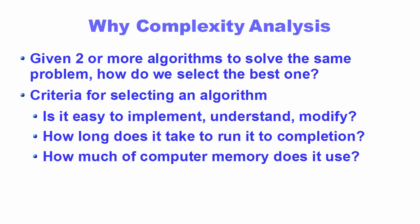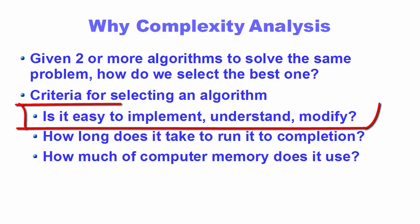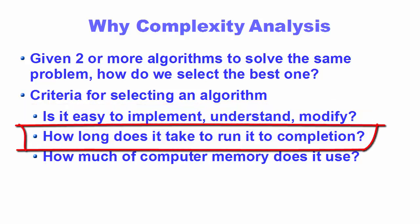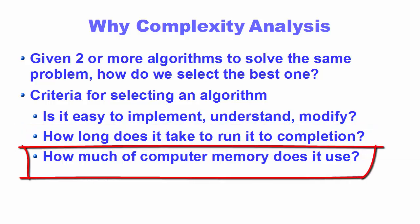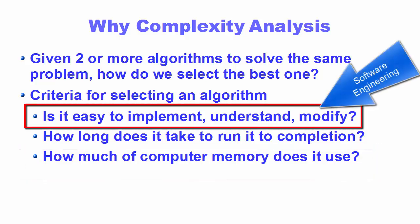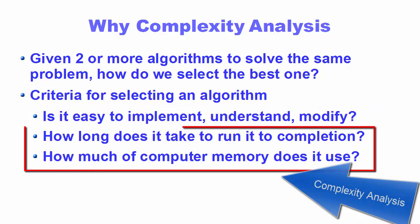There can be different criteria for selecting the best algorithm to solve a problem. These criteria can be: is the algorithm easy to implement, understand, and modify? How long does the algorithm take to run to completion? And how much computer memory does a particular algorithm use? Software engineering is primarily concerned with the first criteria — how easy an algorithm is to understand, implement, and modify.